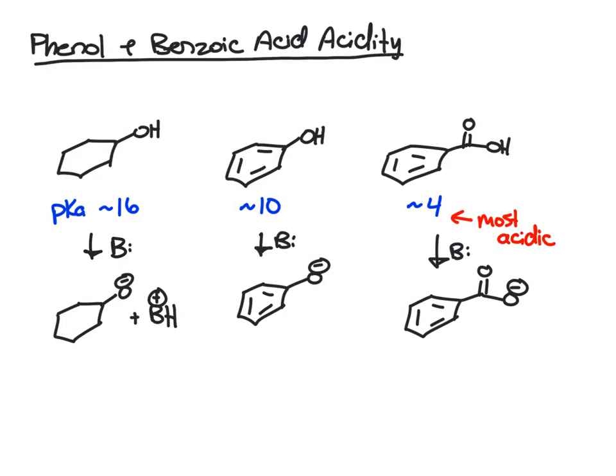To see why we have these acidity trends, for cyclohexanol, the negative charge on the conjugate base has some stability because it's on the electronegative oxygen, but there's no resonance stabilization. That's why it's the least acidic. With the conjugate base of phenol, we can delocalize the negative charge through resonance, delocalizing it over the six carbons on the aromatic ring.